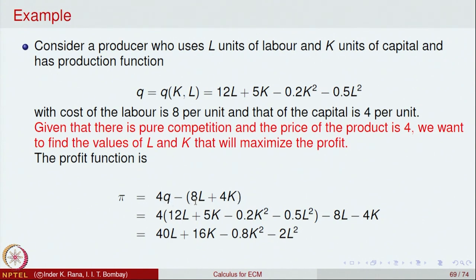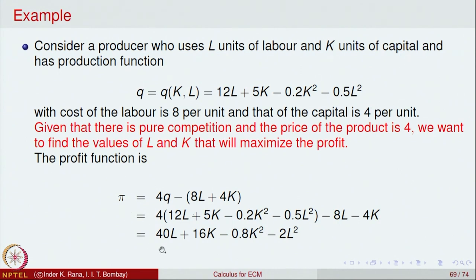The revenue is 4 times Q since the price of the product is 4. The cost function is 8L plus 4K, since labour costs 8 per unit and capital costs 4 per unit. Substituting in the production function and simplifying, the profit function becomes π(L, K) = 40L + 16K − 0.8K² − 2L².